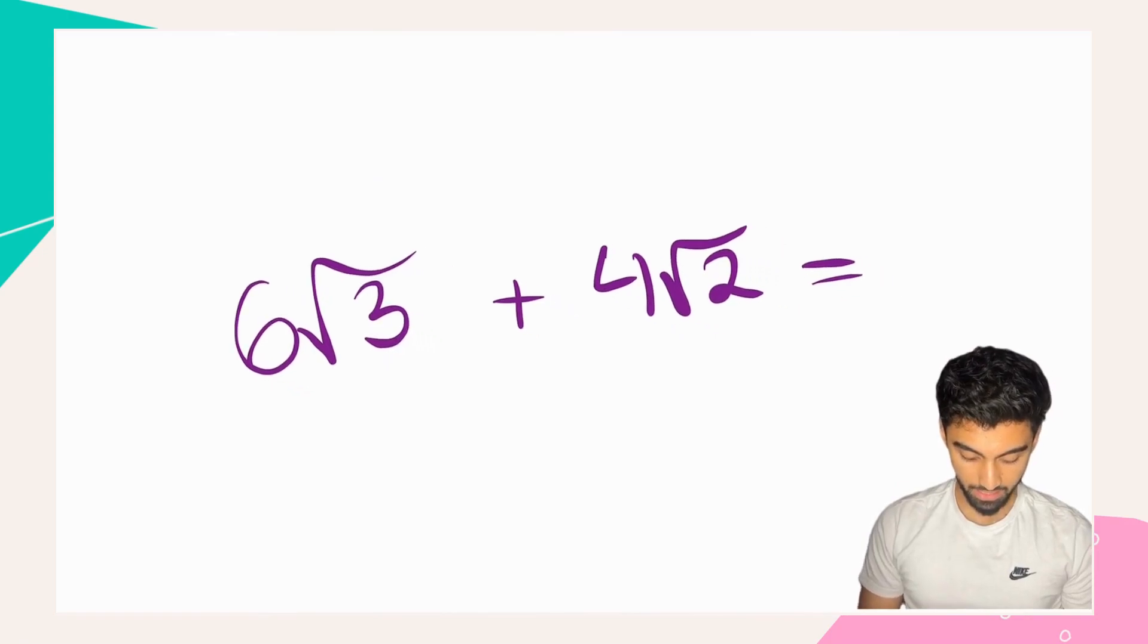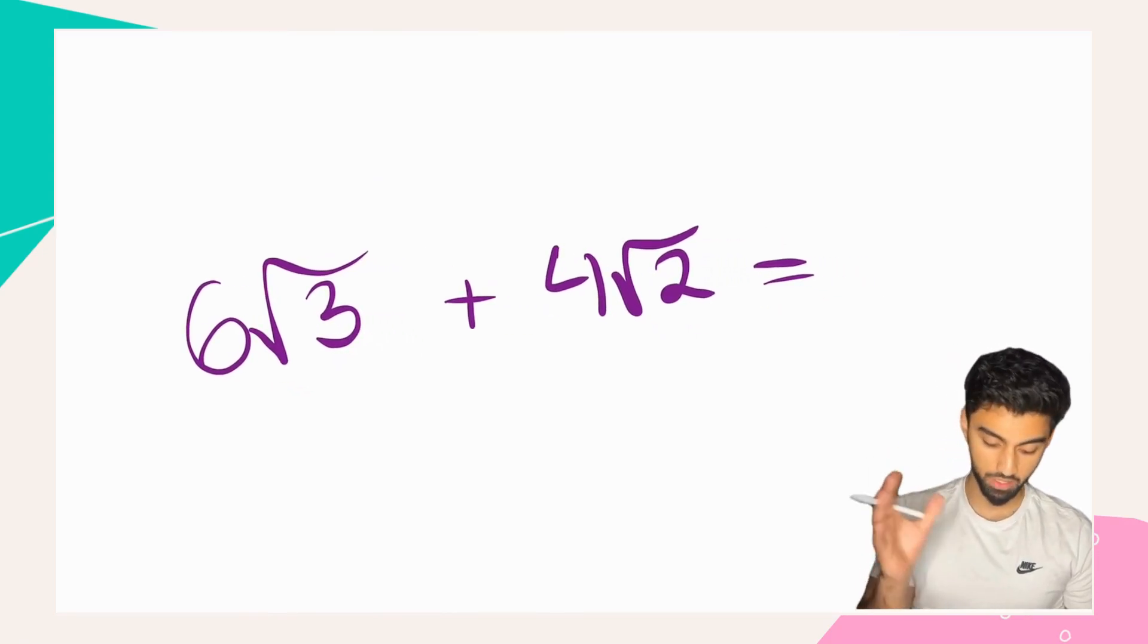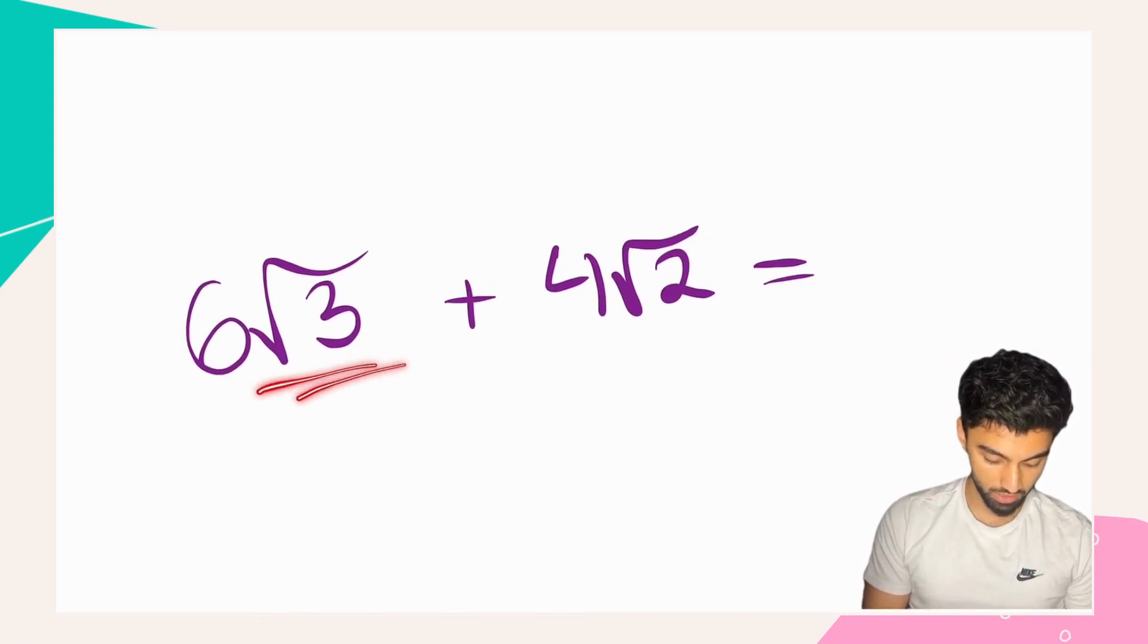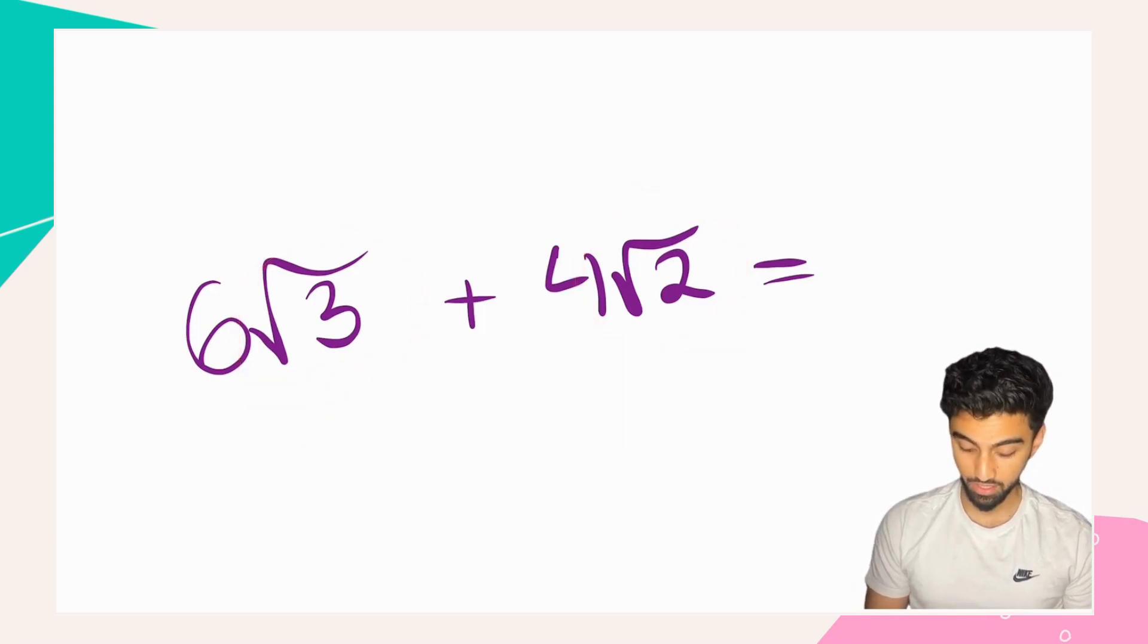Equally, something like this, 6√3 plus 4√2, because these are different, we cannot simplify this.